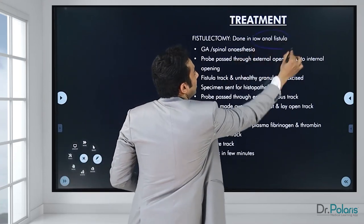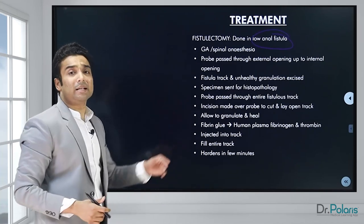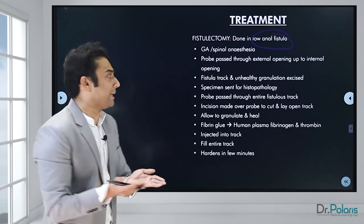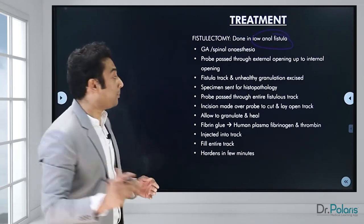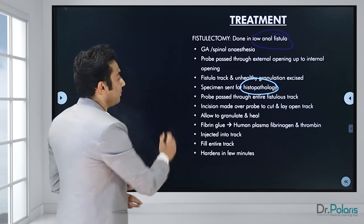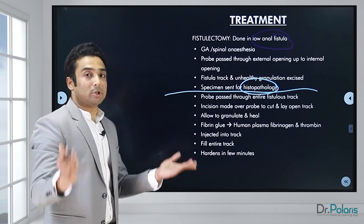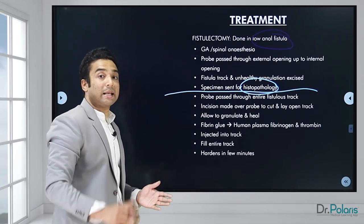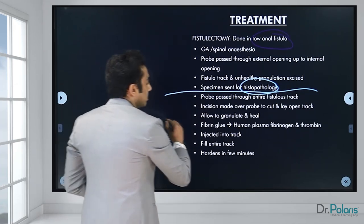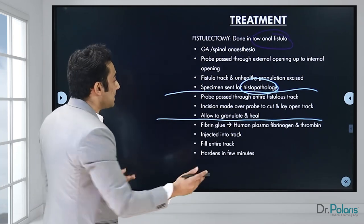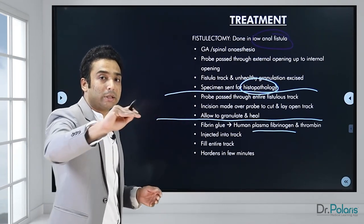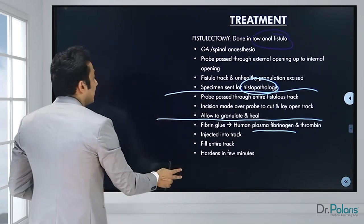For low-level fistulas: fistulectomy is done under general or spinal anesthesia, a probe is passed through the external opening to the internal opening, the fistula tract and unhealthy granulation tissue are excised, and the specimen must be sent for histopathology to rule out Crohn's or tuberculosis. Fistulotomy involves passing a probe through the entire fistula tract and making an incision over the probe to cut and lay open the tract, which is then allowed to heal and granulate. Fibrin glue (human plasma fibrinogen and thrombin) is injected through the external opening and hardens within a few minutes.